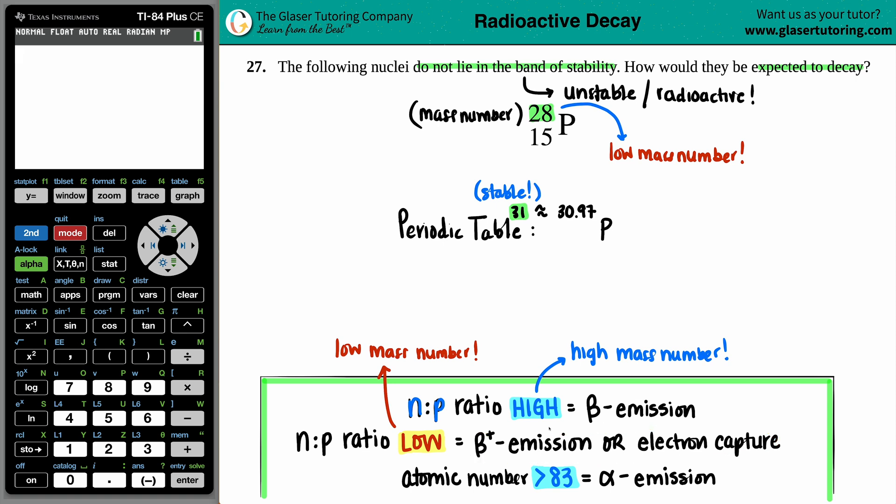So you could either say positron emission or electron capture. I just love to use the emission ones, so I'm just going to say that, hey, this could possibly undergo positron emission and call it a day. But electron capture, maybe.